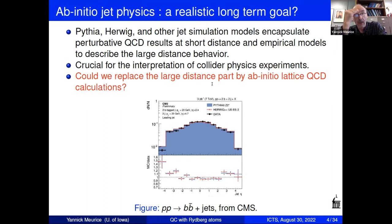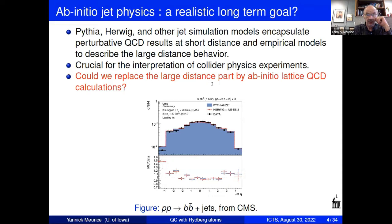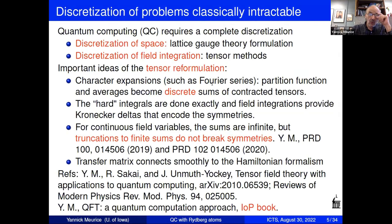A long-term goal is to do jet physics with a quantum computer. If you look at the current state of analysis in collider physics, you need to use PYTHIA, Herwig, or other simulation software. It is based on perturbative QCD for some part, but it has fragmentation models that are not rigorous, and the goal is to replace this part with something that could be performed by a quantum computer.